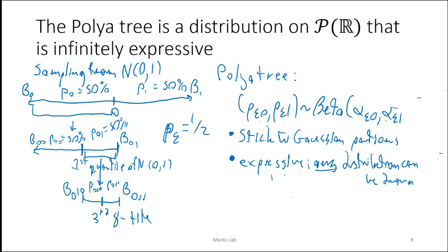Epsilon is a level of the partition — it's a binary string. So for each finite binary string, you have an alpha. By modulating those alphas, or the P's, you can make this express anything. People have proved that if you pick the alphas in a particular way, you can actually be consistent to any real distribution. The role of the normal(0,1) is just that it's absolutely continuous with respect to Lebesgue measure on the line — any density on the line will do.